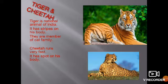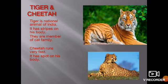Tiger and cheetah. Tiger is the national animal of India. It has stripes on its body. They are members of the cat family. Cheetah runs very fast. It has spots on its body.